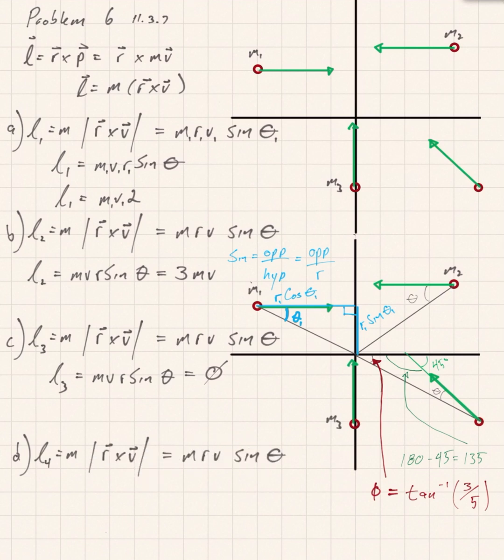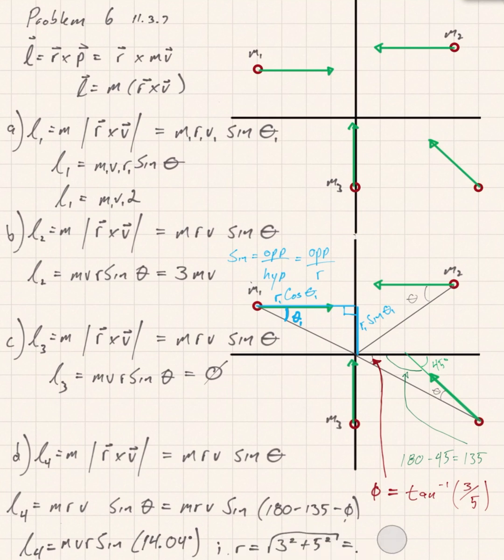Okay, so also now we have all of that and now we can find theta, because again theta is going to be equal to 135 plus phi minus 180. Again, the interior angles of a triangle add up to 180 degrees. So 180 minus 135 minus phi is going to be equal to our theta. We can just put that in the calculator. We know that the angle phi is equal to the inverse tangent of 3 over 5. And we also know that r is going to have to be 3 squared plus 5 squared, that's just the Pythagorean theorem. Putting everything together, you see that r sine theta equals the square root of 2, and so then L4 is going to be equal to mv times square root of 2.